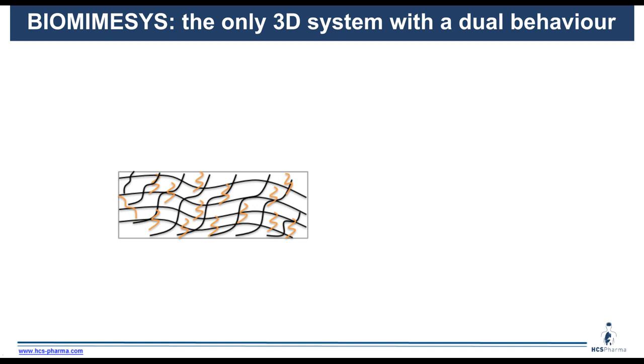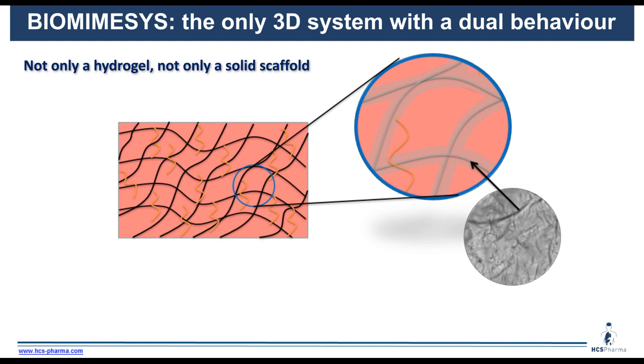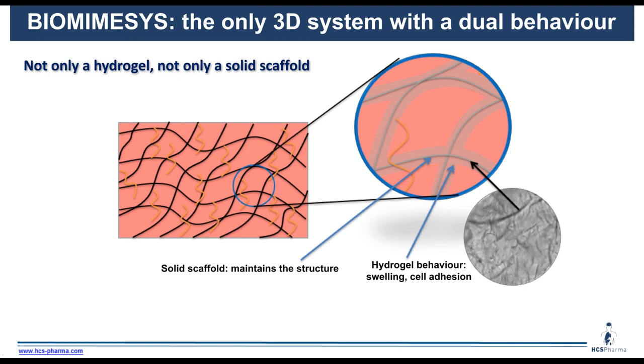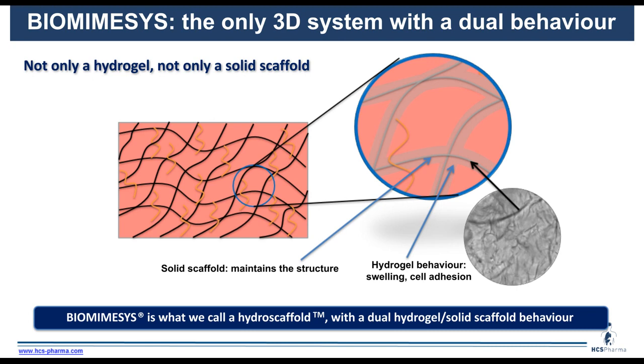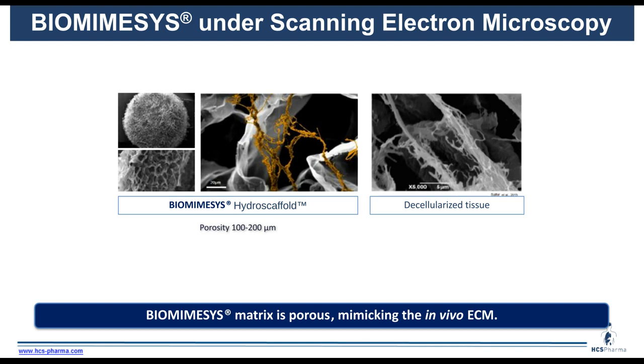That is why we call Biomimesis a hydroscaffold — it is the only 3D culture system with dual behavior. It comes lyophilized as a dehydrated matrix. It is not only a hydrogel and not only a solid scaffold. When we rehydrate the matrix, you have both the solid scaffold behavior with fibers visible in bright field, and also the hydrogel behavior important for swelling and cell addition. This makes Biomimesis a unique hydroscaffold with dual hydrogel and solid scaffold behavior, as one could expect from native extracellular matrix.